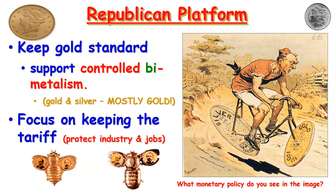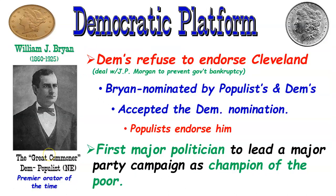Republicans wore famous little gold pins in this election — if you were a gold bug, you wore a pin with McKinley's face. The Democratic platform was the opposite. Democrats refused to endorse Grover Cleveland again because of his previous dealings with the corrupt monopoly behind J.P. Morgan.